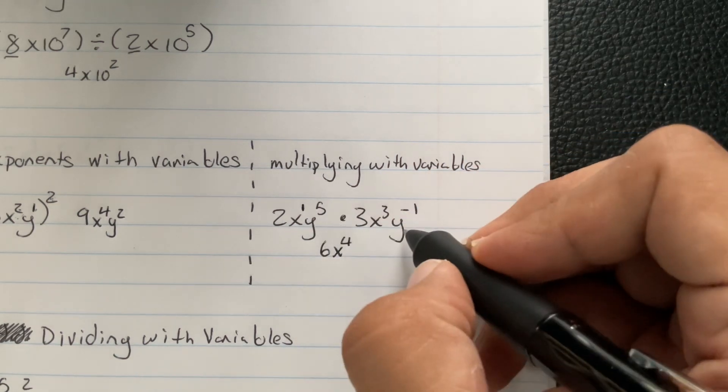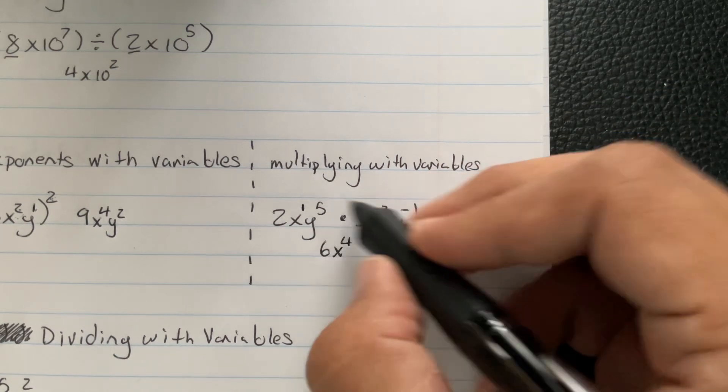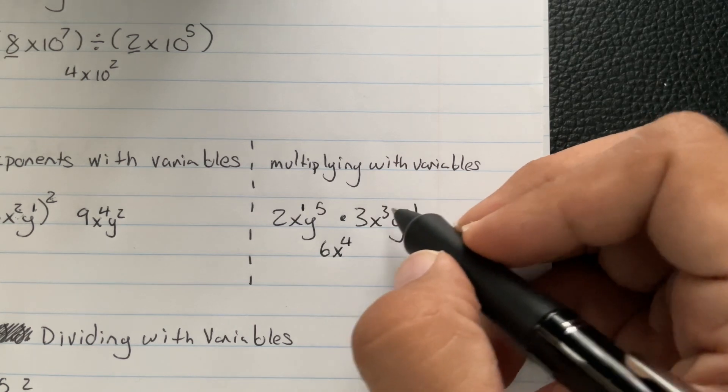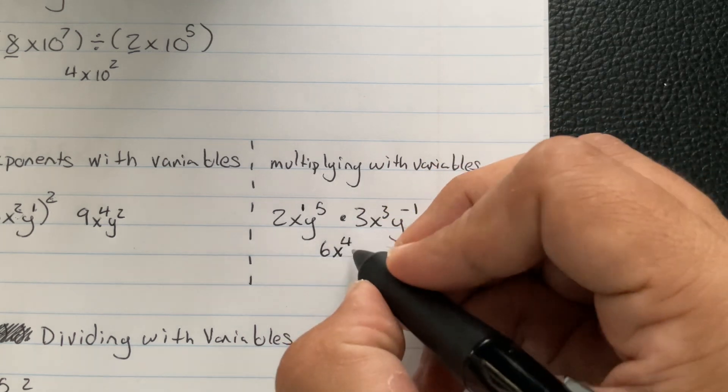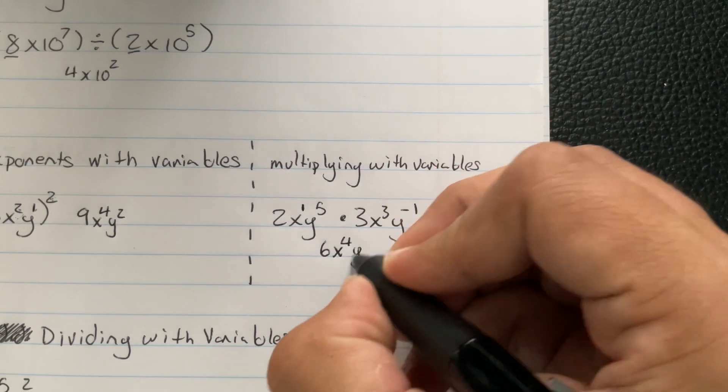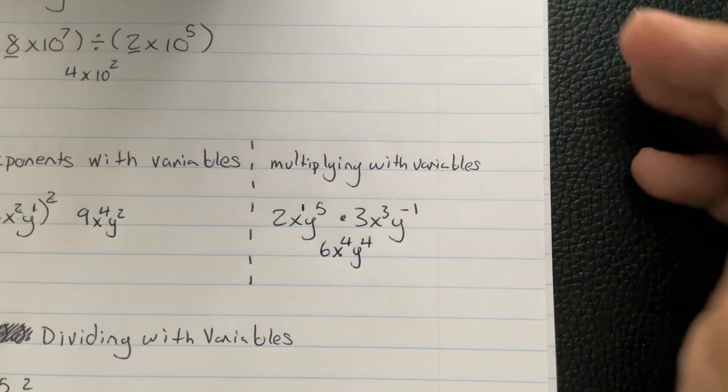y⁵ times y⁻¹, those two numbers are going to add. When you add a negative number, it's the same thing as subtracting. So 5 minus 1, that's going to give us 4 as well. And that's done there.